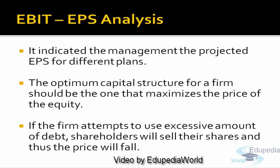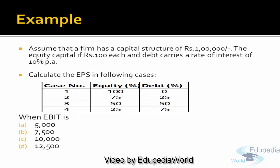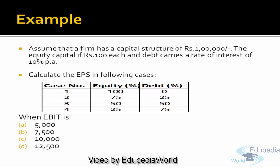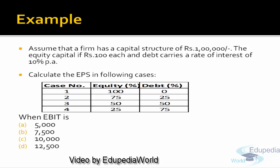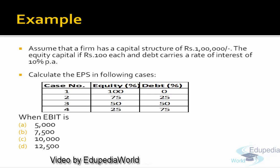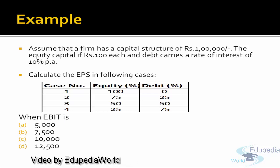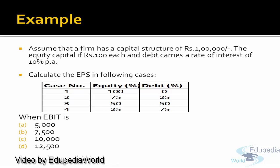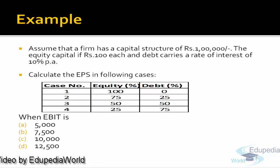Let's analyze what is the impact of EBIT on EPS and which project the company will opt depending on its earnings. A company has a capital structure of rupees 1 lakh, equity capital of rupees 100 each, and the debt carries a rate of interest at 10%. Calculate the EPS in the following cases: when the company has no debt, 25% debt, 50% debt, and 75% debt, and what is the impact of this capital structure distribution at different levels of EBIT.